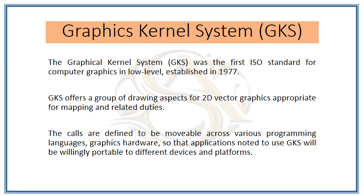In this session we are going to see about the Graphic Kernel System, which comes under graphic standards. These are the widely used standards from 1977 to 1985. GKS is the first ISO standard for computer graphics, a low-level standard established in 1977. It offers a number of drawing aspects for 2D vector graphics, appropriate for mapping and related duties.